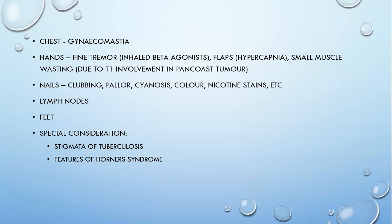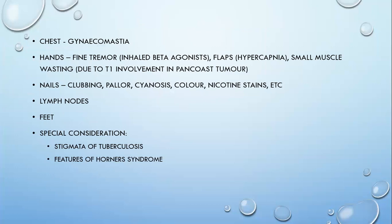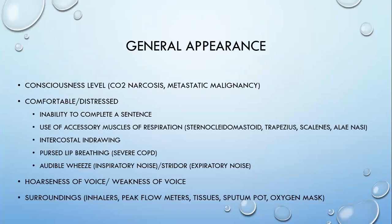Lymph nodes are important. A few special points to look for in the respiratory system: for any patient with respiratory complaints, look for tuberculosis, look for Horner's syndrome. Ideally, the examination should be done with the patient in a relaxed position, at 45-degree resting position, head supported by a pillow — though this may not always be possible if the patient is breathless.